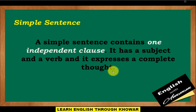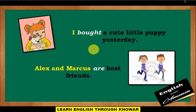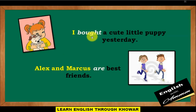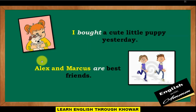Example sentence: 'I bought a cute little puppy yesterday.' This is a simple sentence. The subject is 'I' and the verb is 'bought,' and the sentence expresses a complete thought. Next example: 'Alex and Marcus are best friends.'